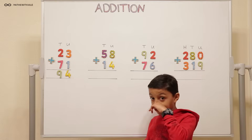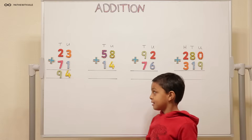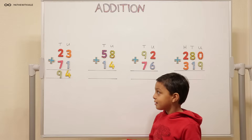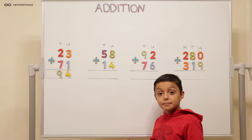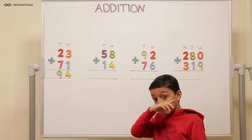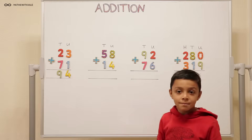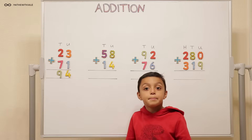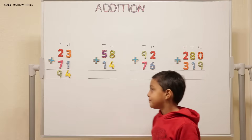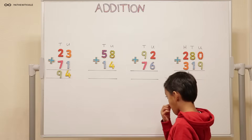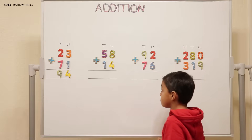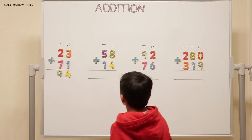So our final answer, ninety-four, has nine lots of tens, which is ninety, and four units. Okay, so can you do the second question for me?